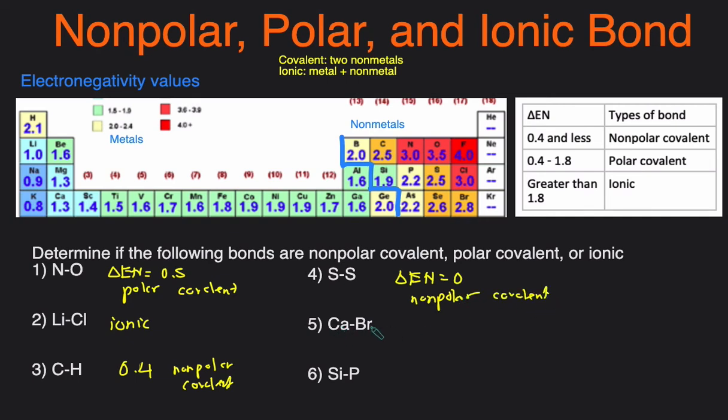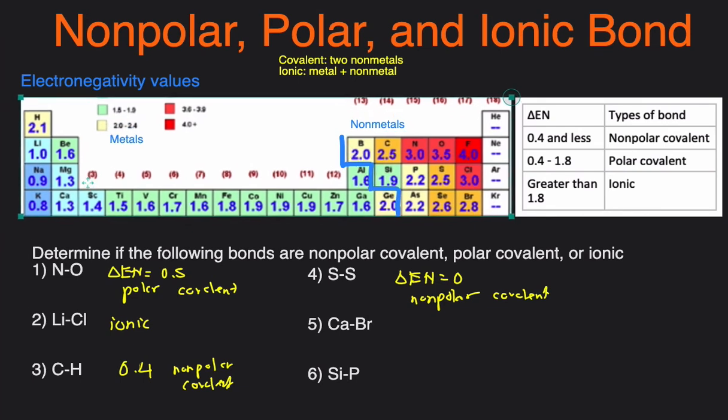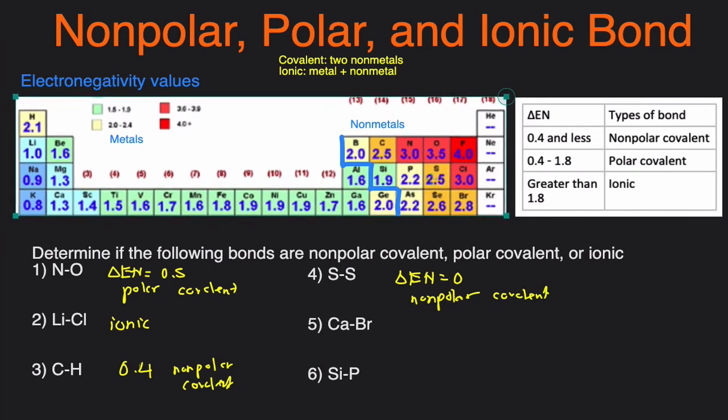Next one, Ca and Br. Ca is over here. It's a metal. And then Br is over here. It's a non-metal. So since it's metal and non-metal, then it has to be ionic.